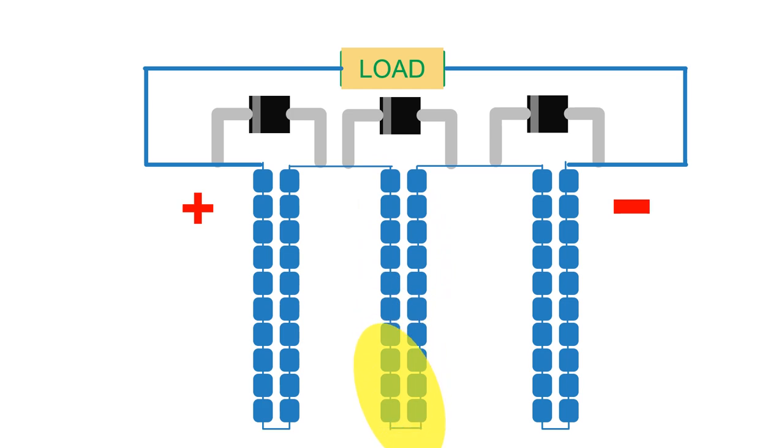The bypass diode helps to get rid of these issues. Instead of going through the high resistance path, the current takes a low resistance path, and that low resistance path is provided by this diode.